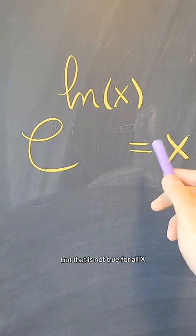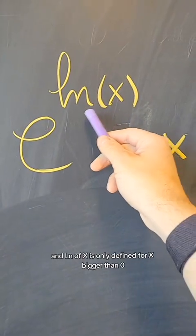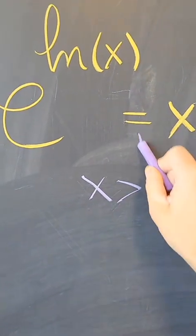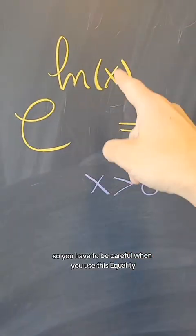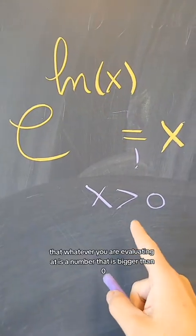But that is not true for all x. This is only true where ln of x is defined, and ln of x is only defined for x bigger than 0. So you have to be careful when you use this equality that whatever you are evaluating at is a number that is bigger than 0.